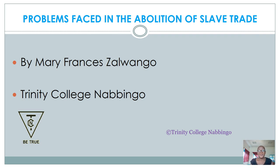Hi people, hope you're doing well. Today we are going to look at the problems faced in the abolition of slave trade. In the previous lessons we looked at the reasons why slave trade was abolished and the steps taken in the abolition of slave trade in East Africa. Today we are looking at those challenges the abolitionists faced in trying to end this trade in East Africa. This is Mary Francis at Trinity College.